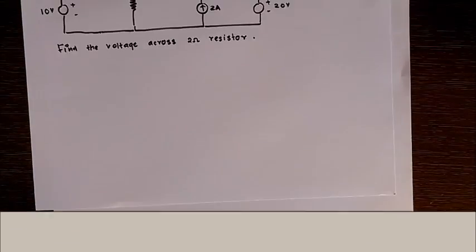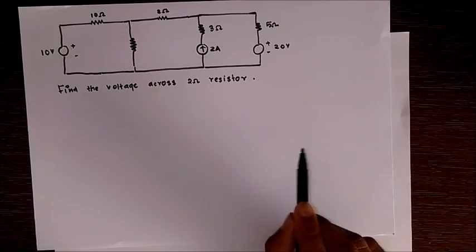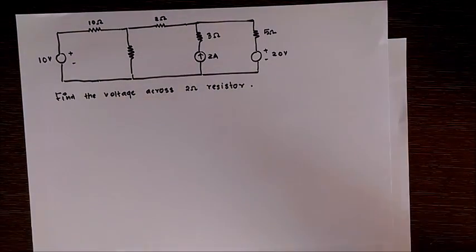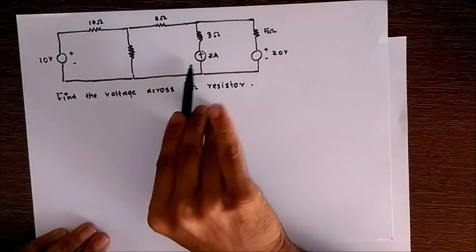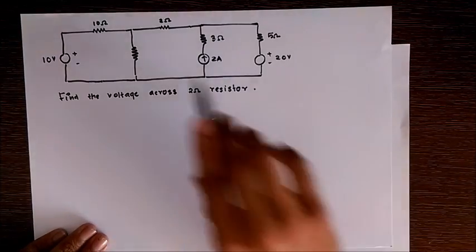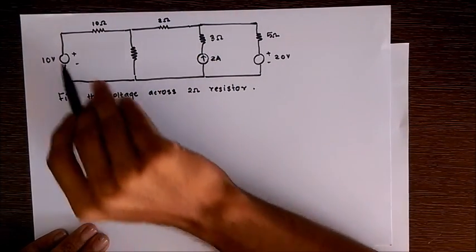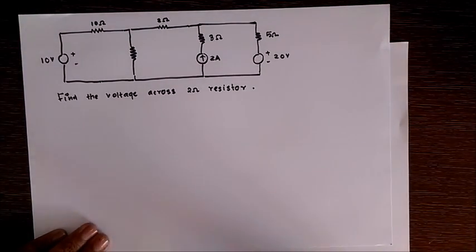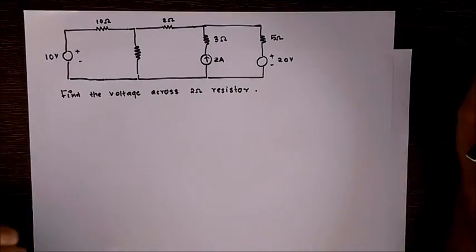So we are given a circuit like this and we have to find out the voltage across the 2 ohm resistor right here. To find out the voltage drop, we can see that there are three sources: two voltage sources and one current source. So we need to find out the voltage drop across the 2 ohm resistor in each case and sum it algebraically.